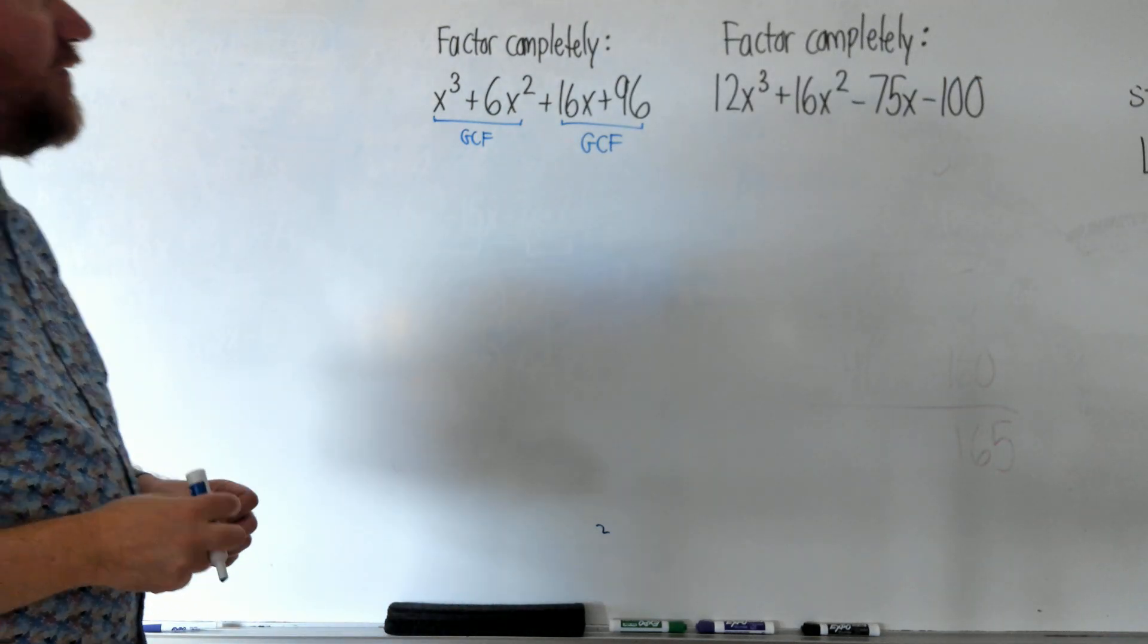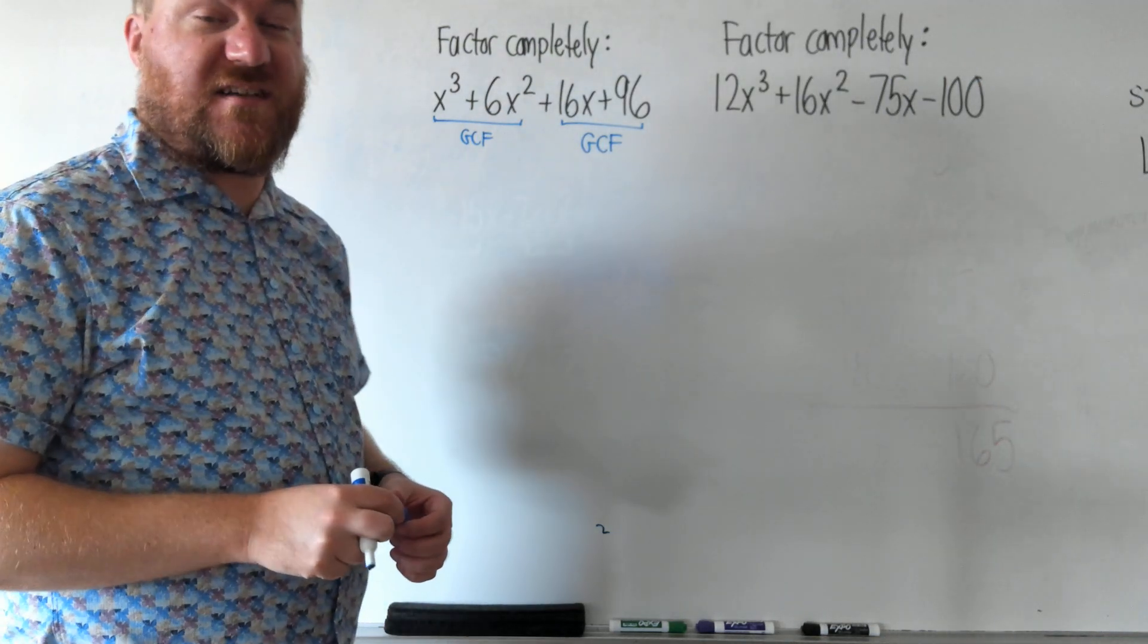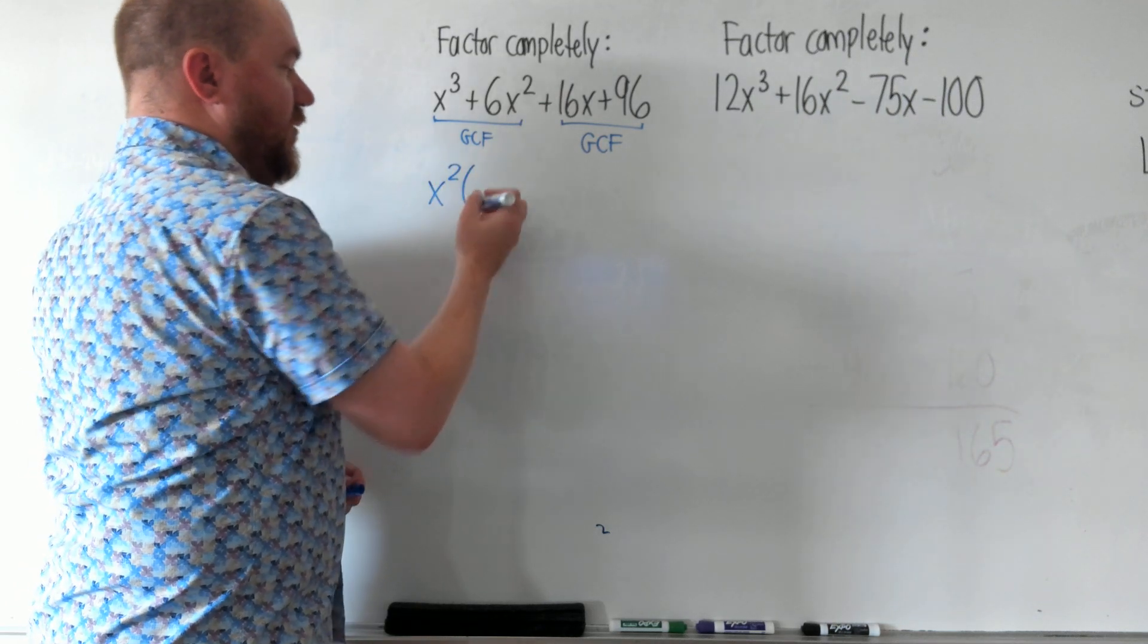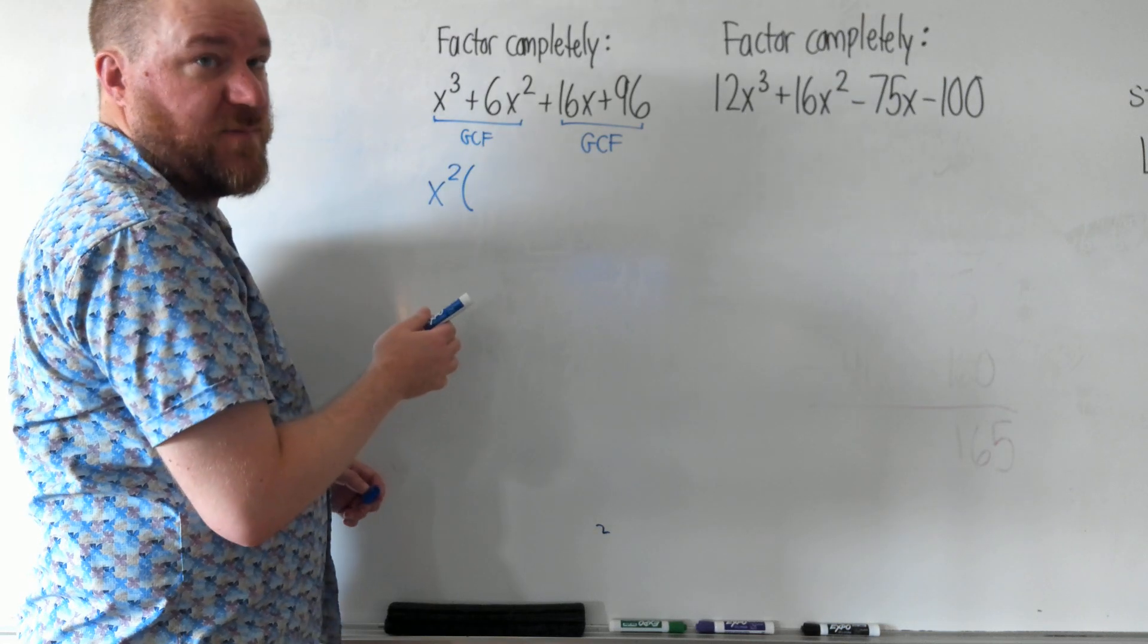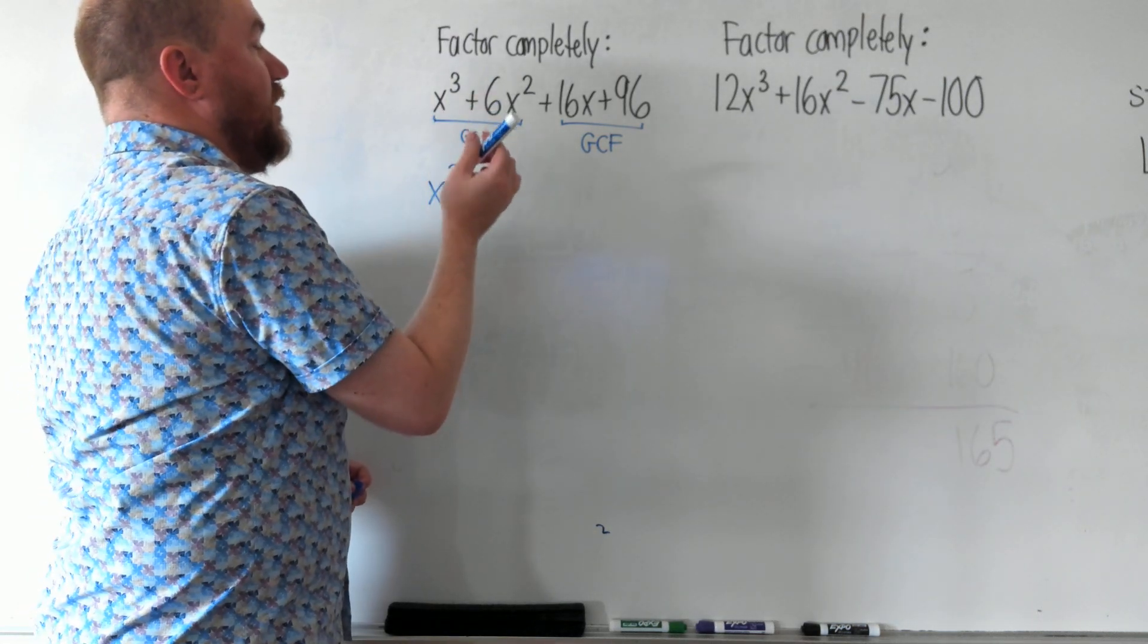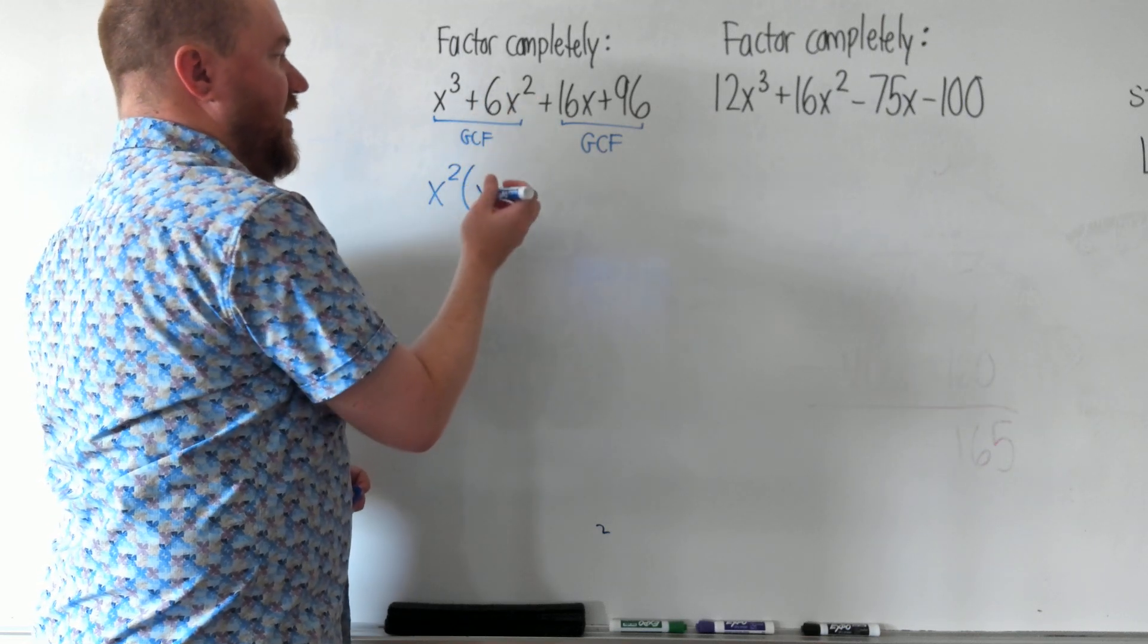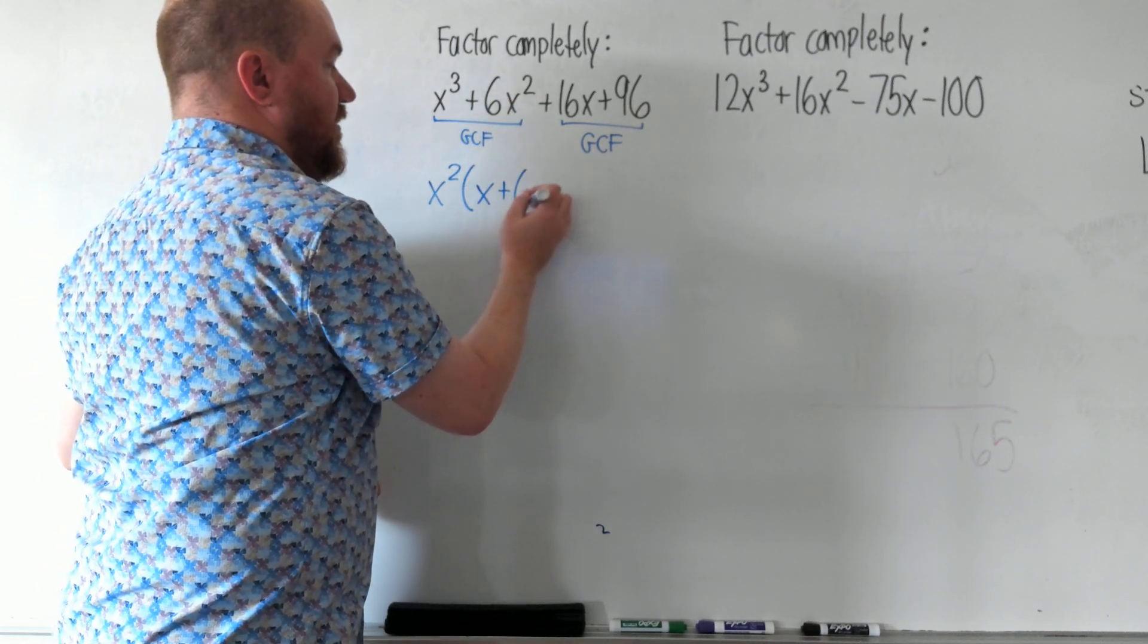What's the GCF of x³ + 6x²? Well, the GCF of that would be x². Let's see what's left over when we divide both of those by x². x³ divided by x² would be x, and 6x² divided by x² would be 6.